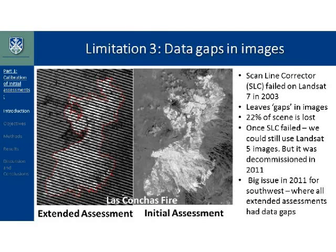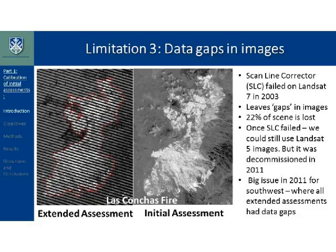The last limitation I'll discuss is the failure of the scan line corrector of Landsat 7 in 2003. This failure caused striping of images — essentially gaps in the data, as visible in the Lost Conscience Fire image showing black striping. When this failed in 2003, MTBS used Landsat 5 imagery as a backup, but Landsat 5 was decommissioned in November 2011. So any image acquired after November 2011 had a striping problem. As we know, 2011 was one of the biggest fire years in the Southwest, so we could not properly extract high severity area within these striped images — a pretty big problem for us.